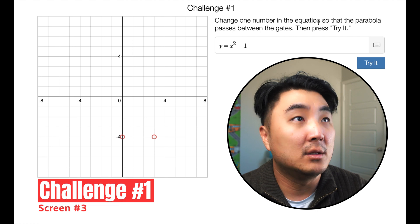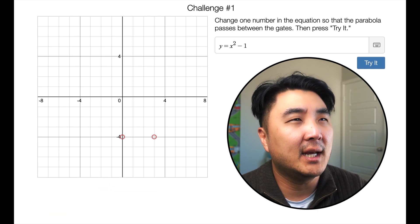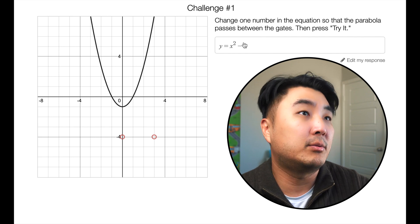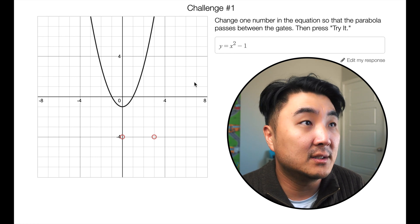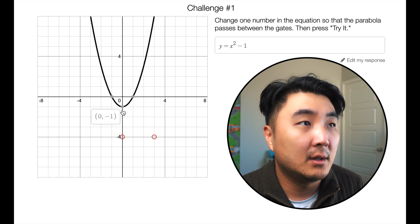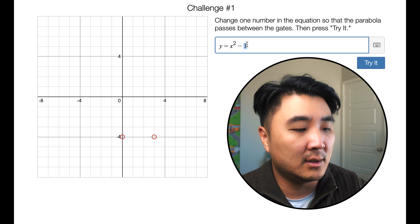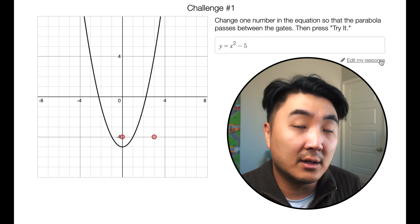Screen number three. Challenge number one. Change one number in the equation so that the parabola passes between the gates. Then press try it. There's the parabola. If you know anything about parabolas, you will know that that minus one right here is the y-intercept, and sure enough it's the y-intercept right there at zero comma negative one. So we want it to go at least to negative five I'm assuming. So let's just change that one number to a five, and there you go.